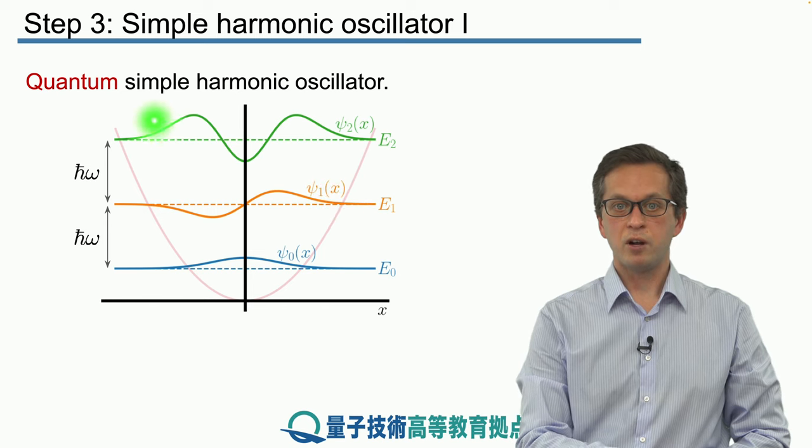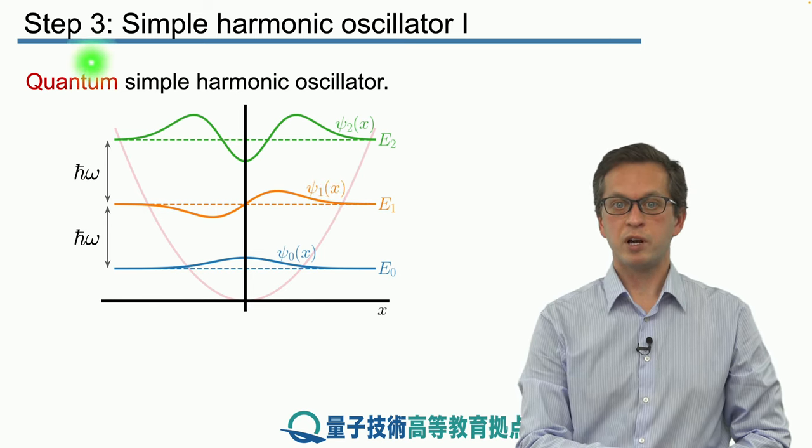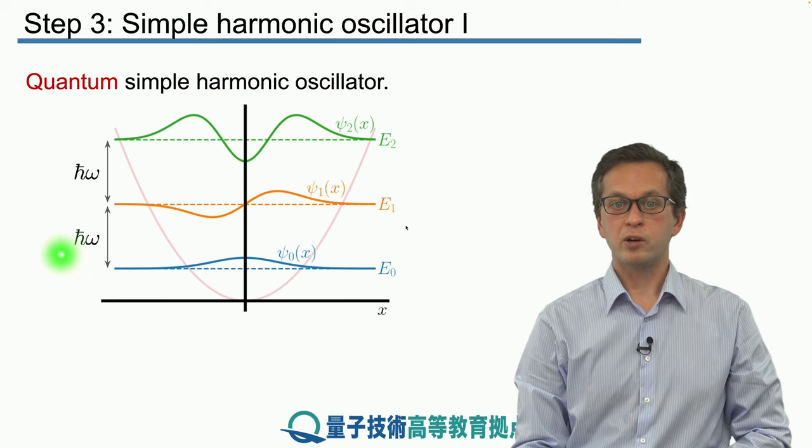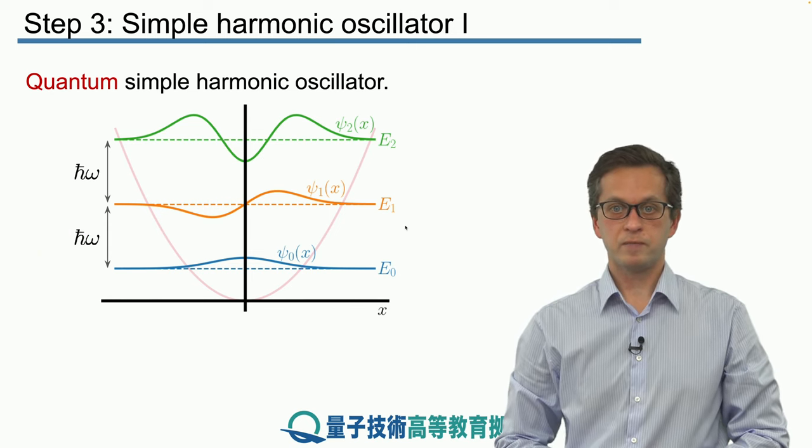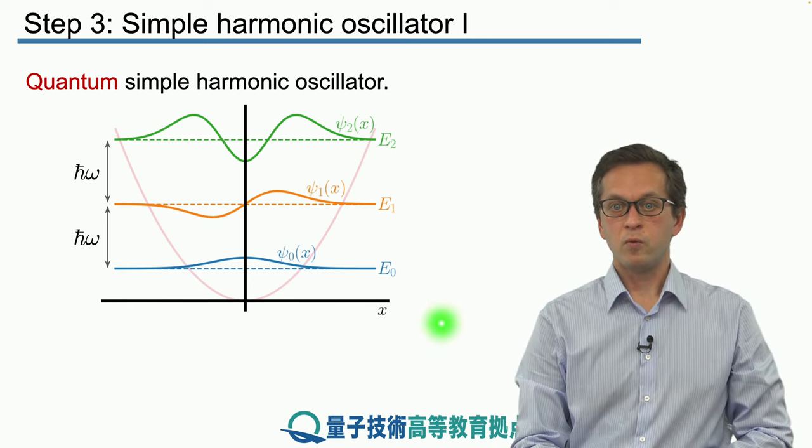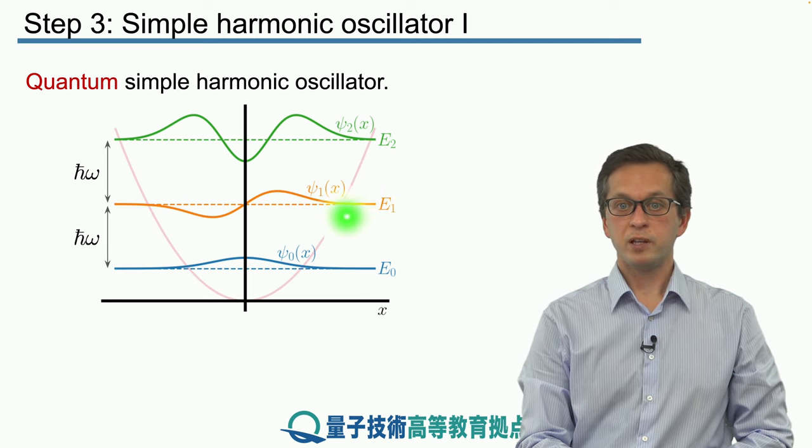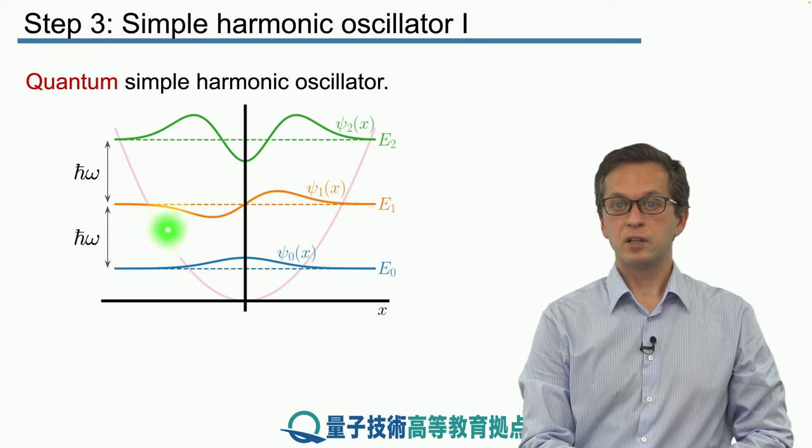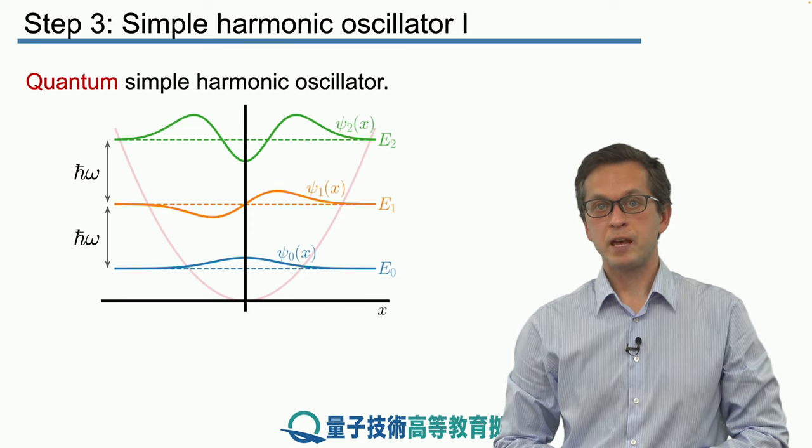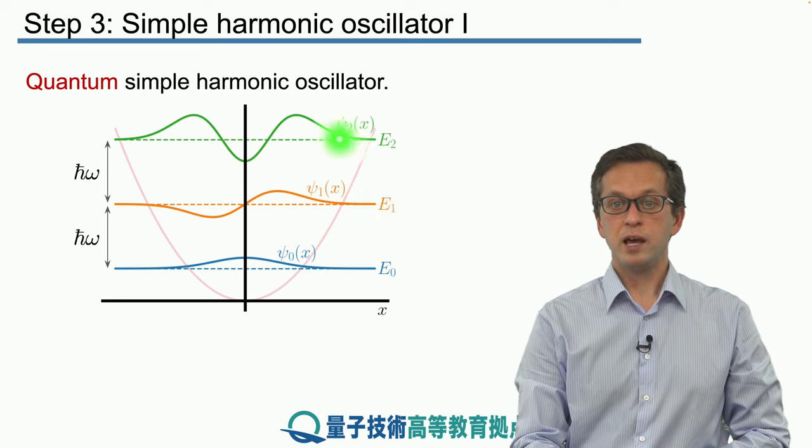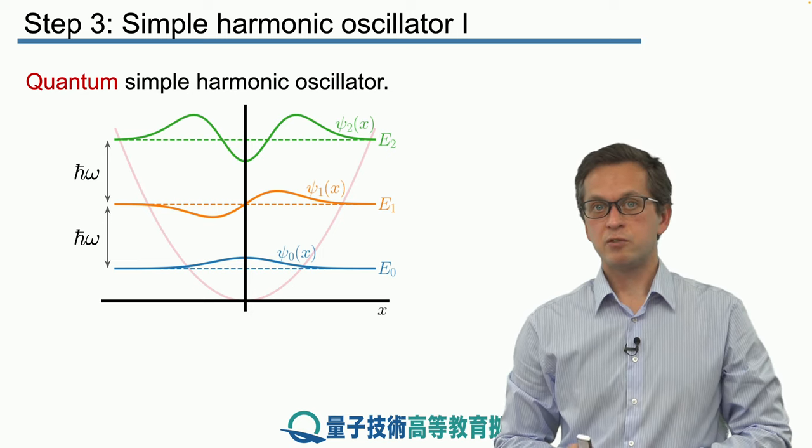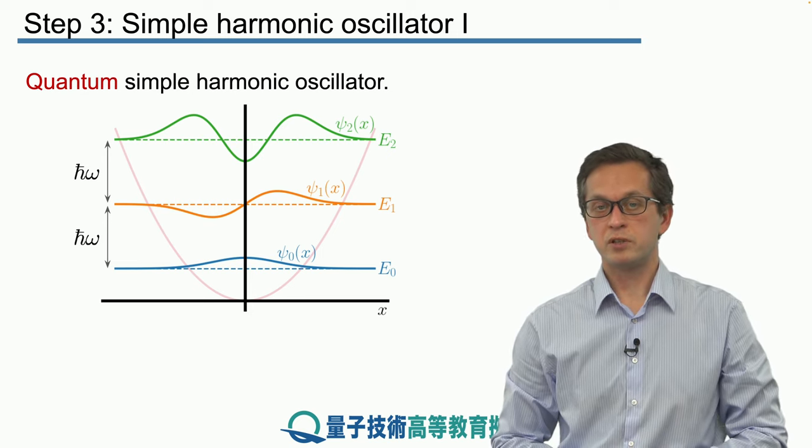So here we have our quadratic potential for the simple harmonic oscillator Vx. The lowest energy E naught can be found here with the corresponding wave function, the Gaussian psi naught of x. If we go one energy step higher to E1, we increase the energy by h bar omega, and we get the eigenfunction given by this orange line, psi 1 of x. If we add another energy h bar omega, we move to E2 with its corresponding eigenfunction given by this curve. These are the traditional solutions using the position representation for a simple harmonic oscillator.